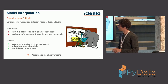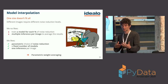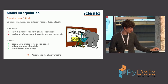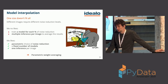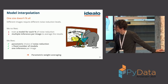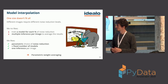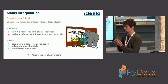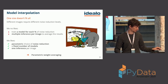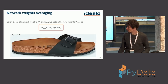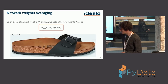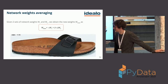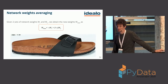For model interpolation: the level of denoising desired depends on the input image, and you don't want to train many models or run multiple inferences per image. What works here is averaging the weights of two or more trained models and moving a weighting parameter to get consistent results across the full denoising range — this gives you all the range with few models and only a single inference per image.